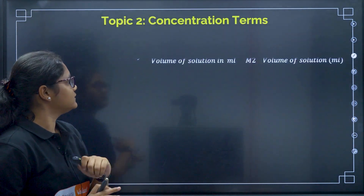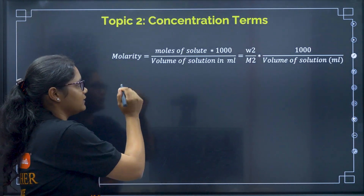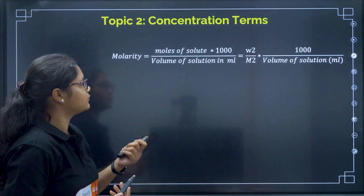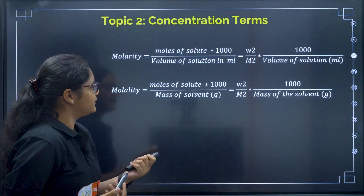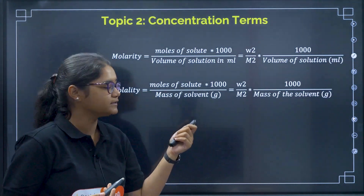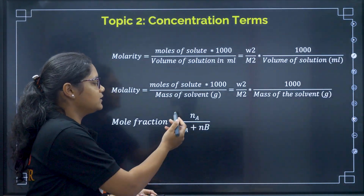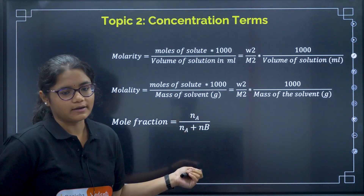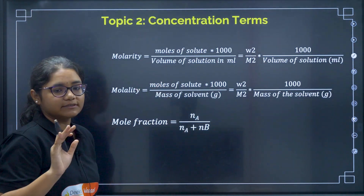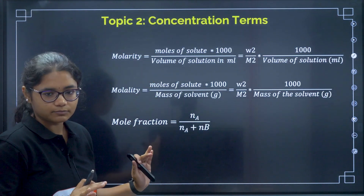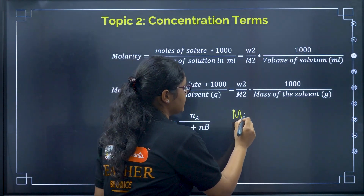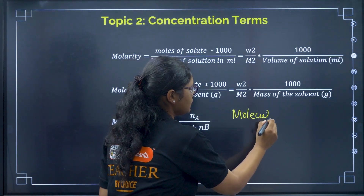Now let us go to concentration terms. We have the molarity formula: moles of solute divided by volume of solution in mL, multiplied by 1000. Then the molality formula: moles of solute divided by mass of solvent in grams, multiplied by 1000. Then mole fraction: moles of the component divided by total number of moles. Direct formula-based questions will be asked, so revise these formulas properly. You should also know how to calculate molecular masses.